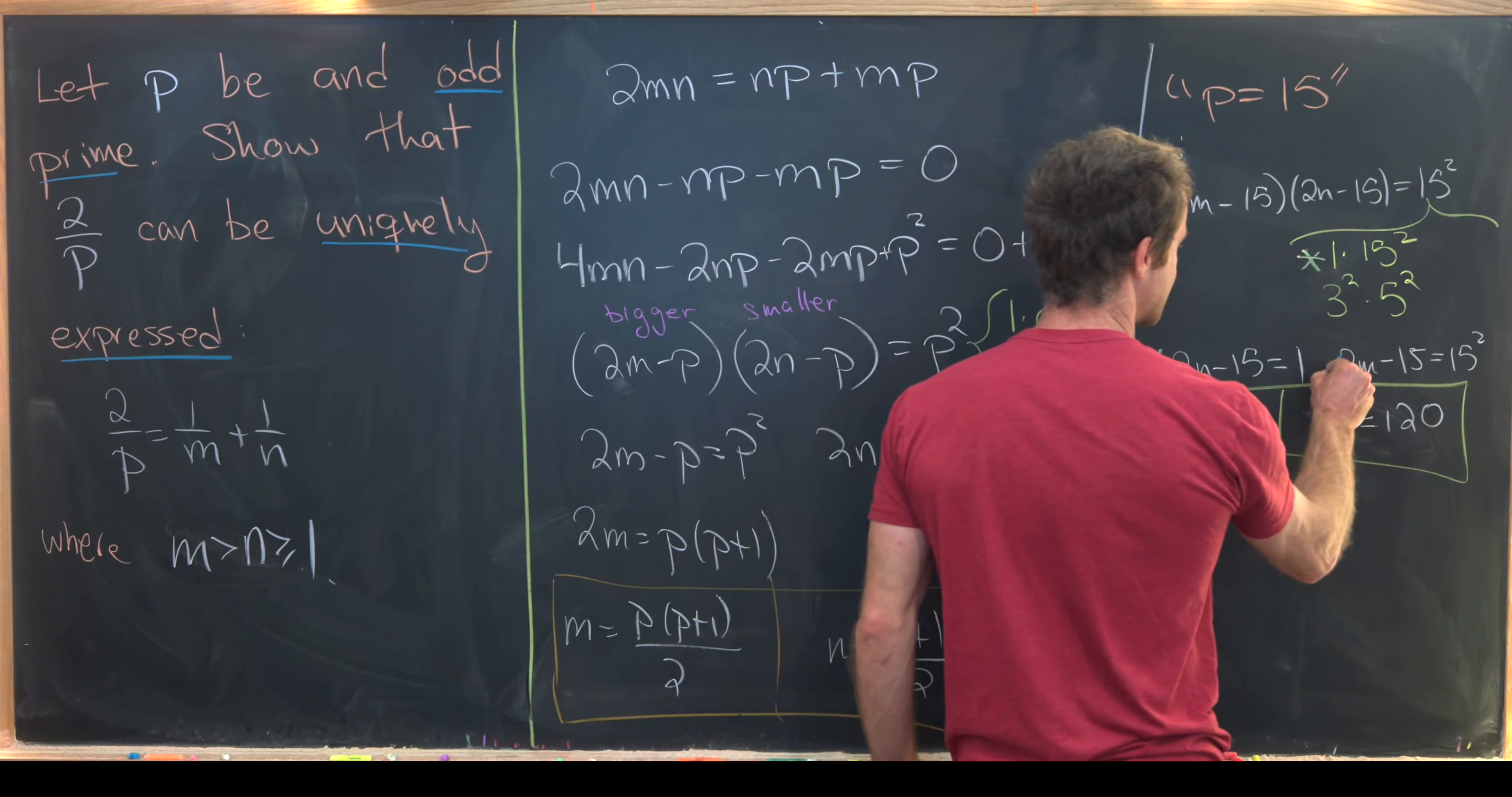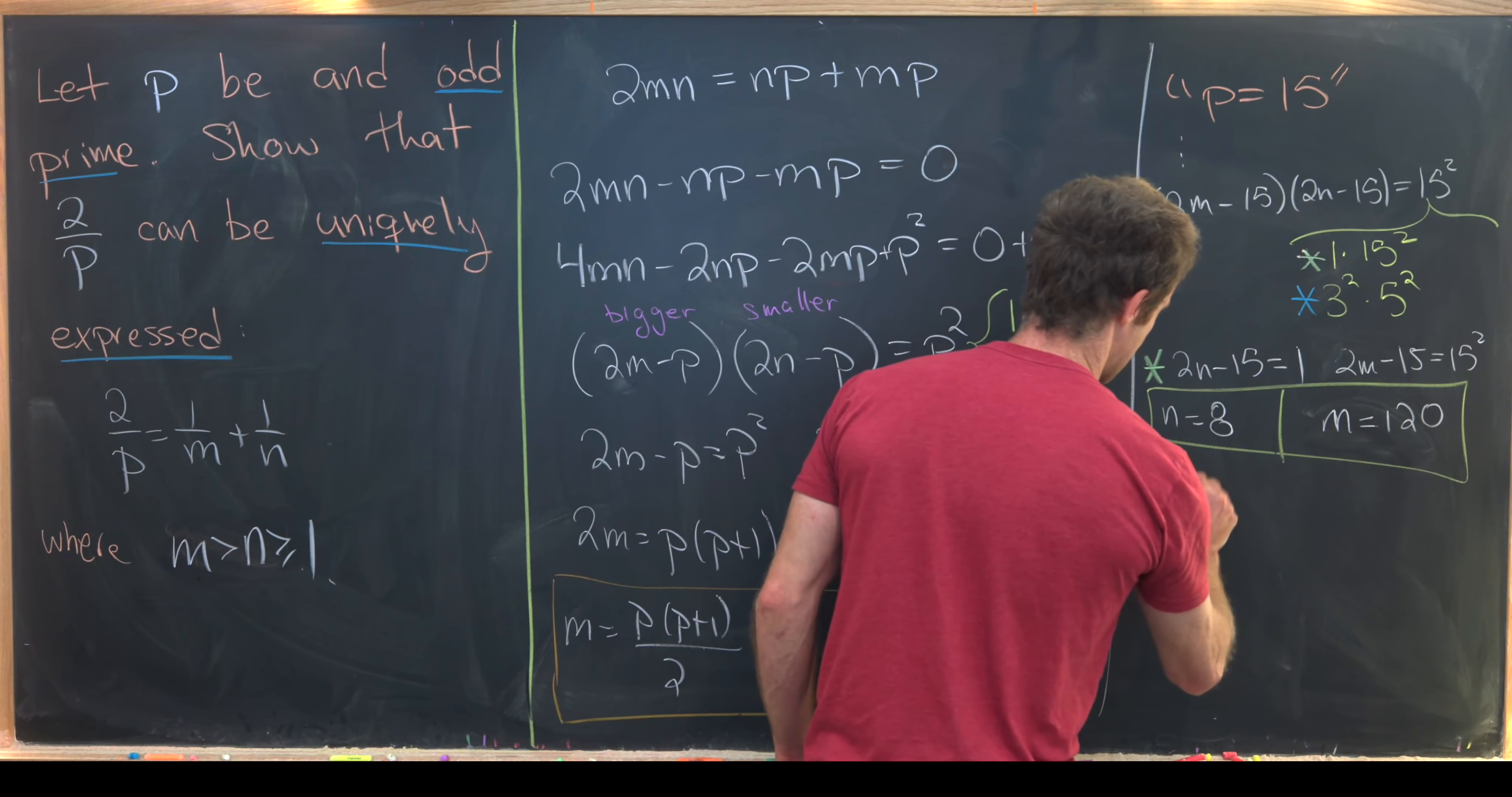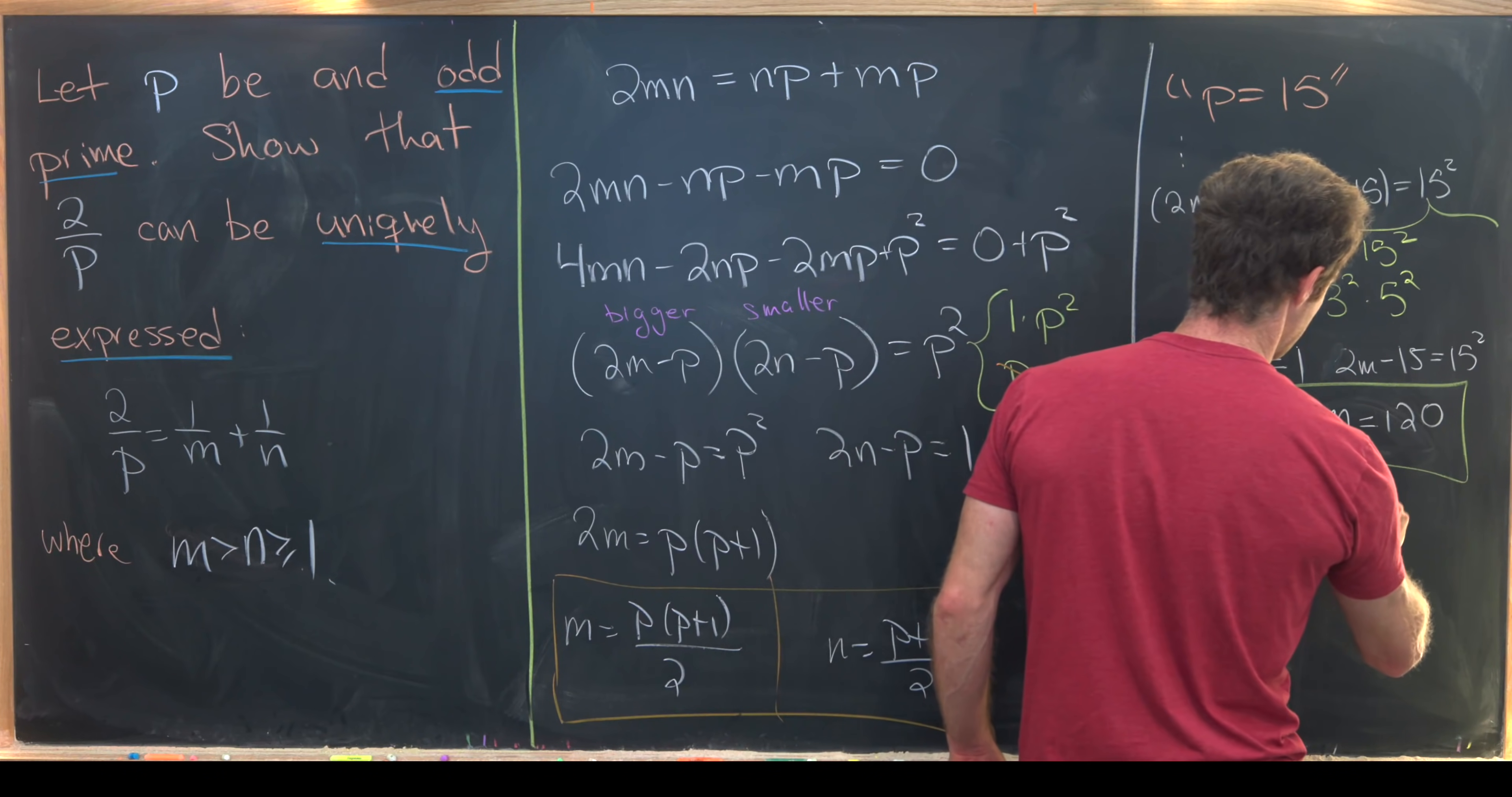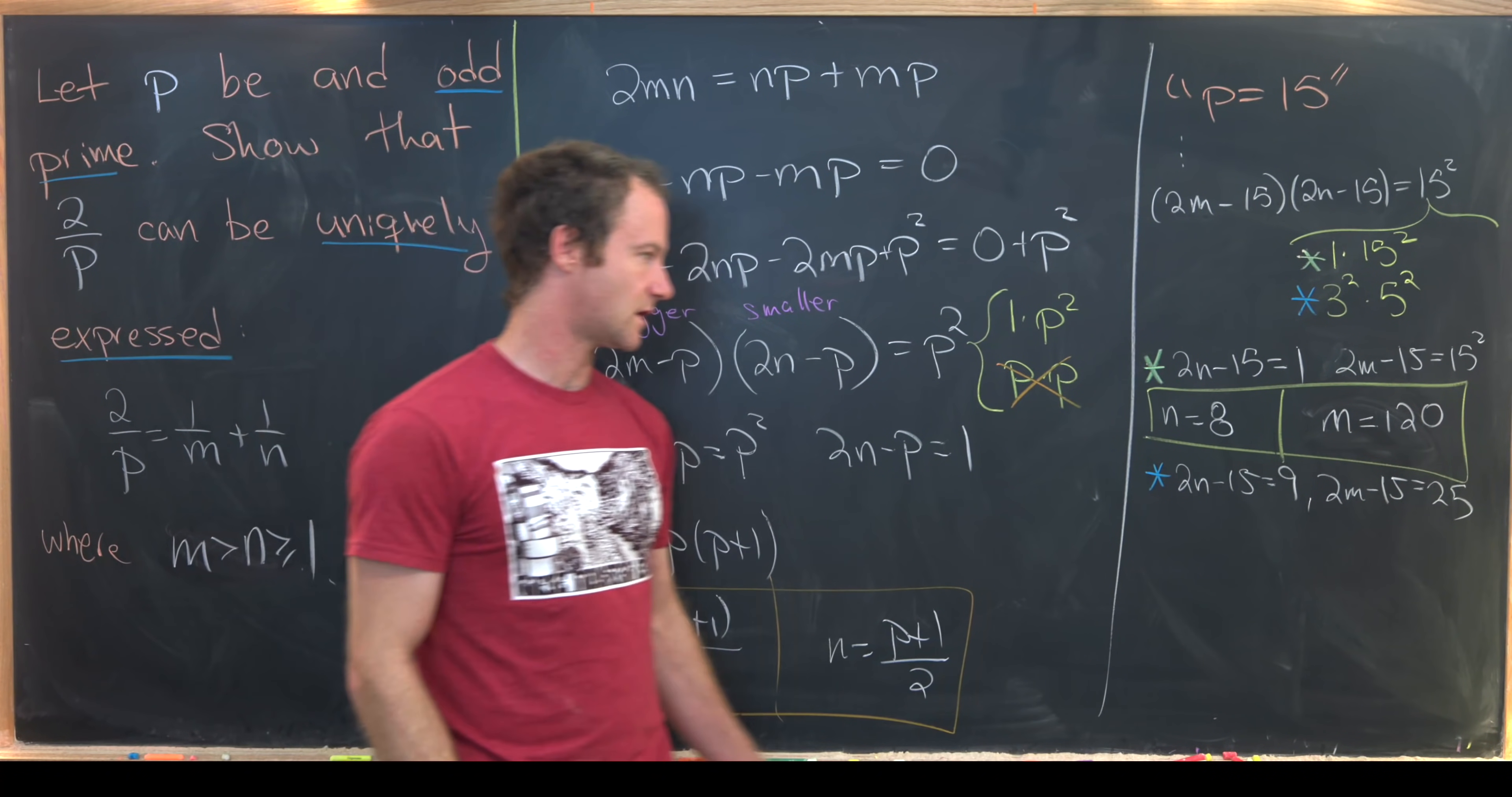Now let's do this one which I'll now star in blue. Bring that down here. So that'll give me 2N - 15 is equal to 9 and 2M - 15 is equal to 25. And that's pretty easy to solve.